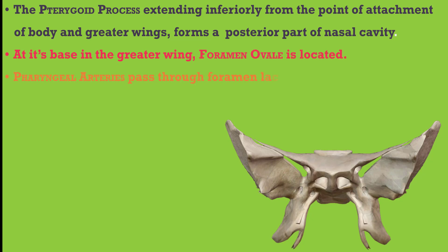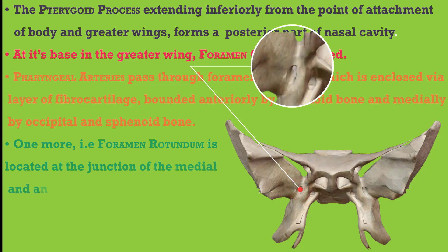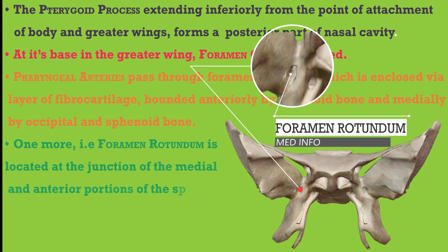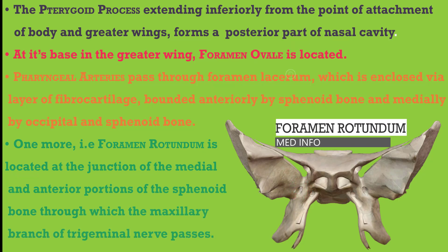The pterygoid process extends inferiorly from the junction of the body and greater wings, forming the lateral posterior part of the nasal cavity. At its base, in the greater wings, the foramen ovale is located. Pharyngeal arteries pass through the foramen lacerum, which is enclosed by a layer of fibrocartilage bounded anteriorly and medially by the sphenoid and occipital bones. The foramen rotundum is located at the junction of the medial and anterior portions of the sphenoid bone, through which the maxillary branch of the trigeminal nerve passes.